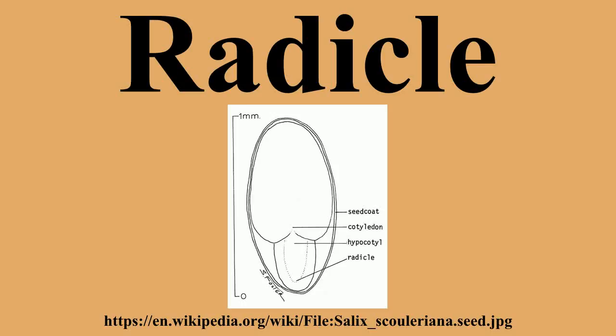Above the radicle is the embryonic stem, a hypocotyl, supporting the cotyledon. It is the embryonic root inside the seed — the first thing to emerge from a seed and down into the ground to allow the seed to suck up water and send out its leaves so that it can start photosynthesizing.